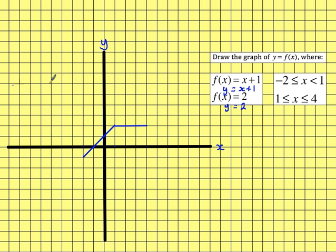And we're finished. So that is the graph of f(x) for the entire domain, all the way from minus 2 to 4.